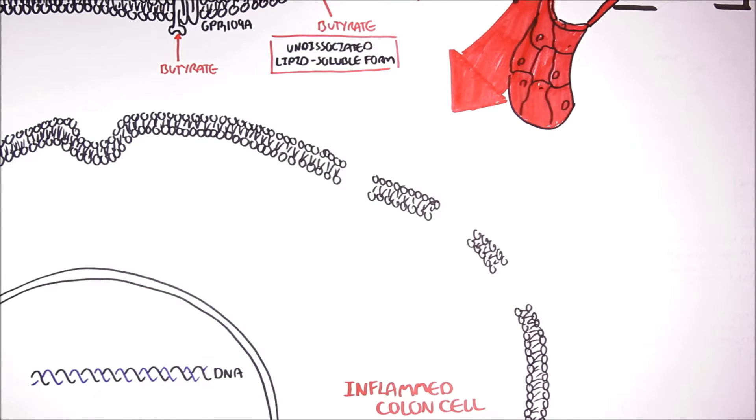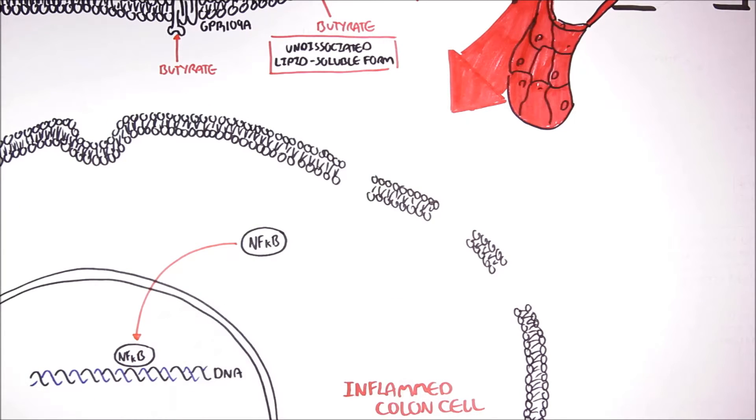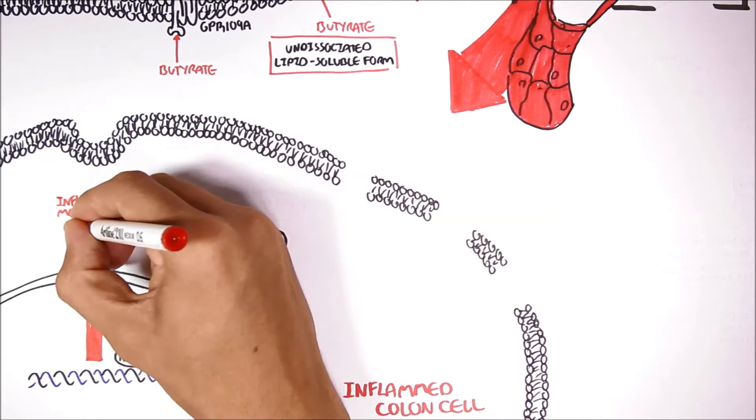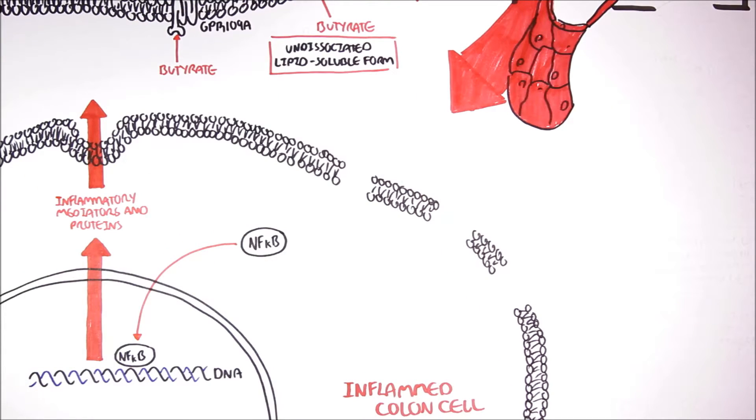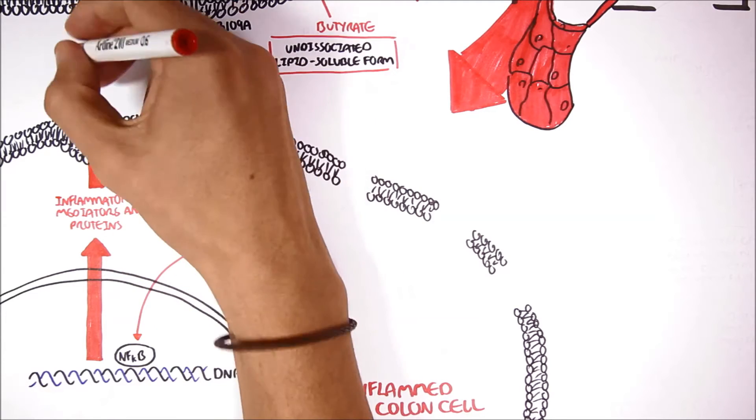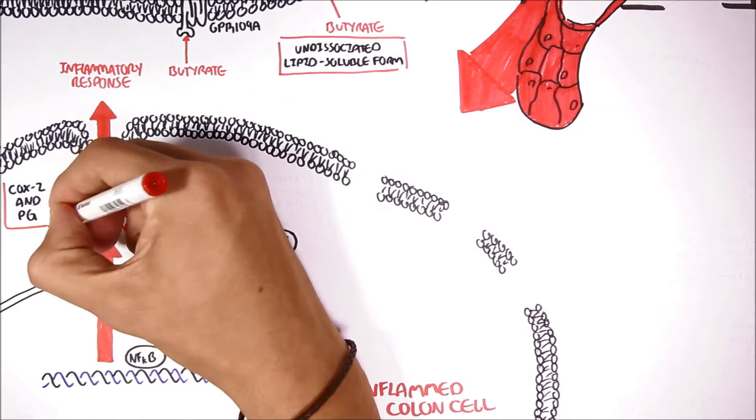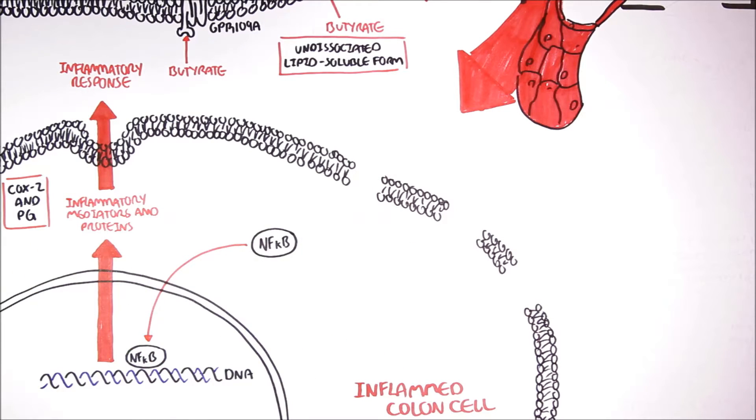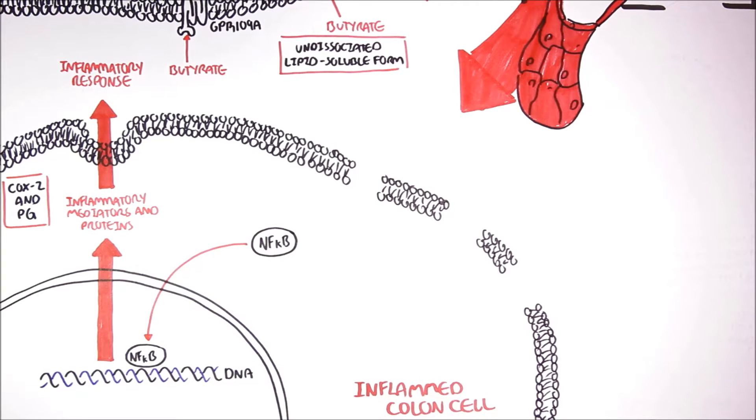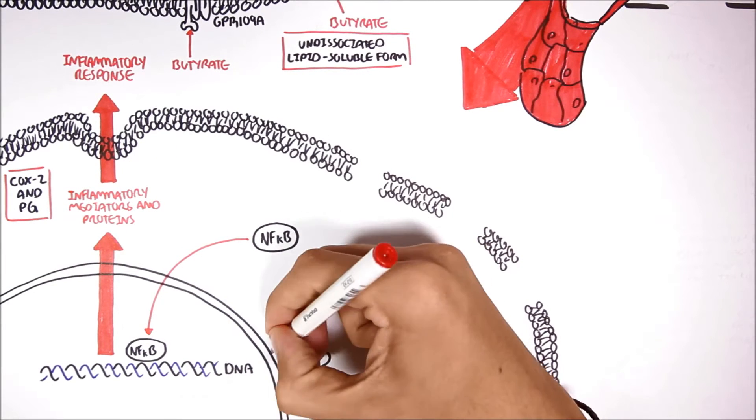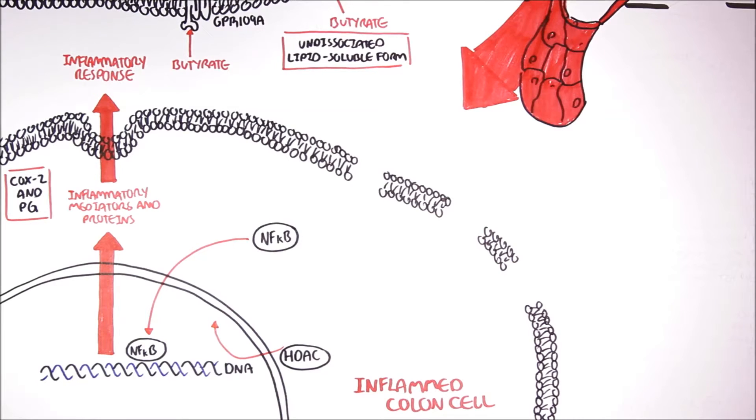In an inflamed cell, there is activation of transcription factors that controls the expression of inflammatory cytokines and other proteins. One of these transcription factors is Nuclear Factor Kappa B. Nuclear Factor Kappa B will stimulate the transcription of RNA that will produce inflammatory mediators and proteins, cytokines, that will then be released by the inflamed cell. These inflammatory proteins will promote the inflammatory response. Examples of these proteins and enzymes produced are COX2 and prostaglandins. In an inflamed colon cell, HDAC may also be suppressing important genes that normally maintain colon cell function and health.